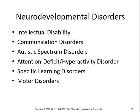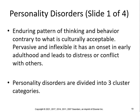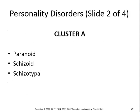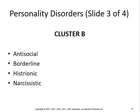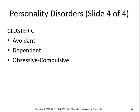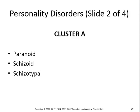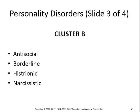Neurodevelopmental disorders include intellectual disability, communication disorders, autistic spectrum disorders, attention deficits, specific learning disorders, and motor disorders. Personality disorders are an enduring pattern of thinking and behaving contrary to what is culturally acceptable — pervasive and inflexible, with onset in early adulthood. They are divided into three cluster categories: Cluster A — paranoid, schizoid, schizotypal; Cluster B — antisocial, borderline, histrionic, narcissistic; Cluster C — avoidant, dependent, obsessive-compulsive. Know the definitions of schizoid, paranoid, narcissistic, and histrionic.